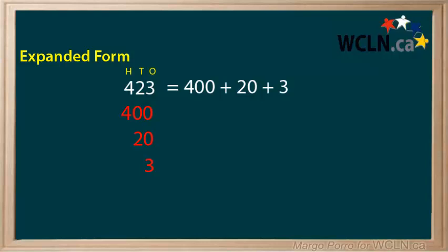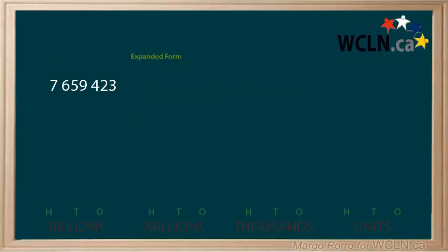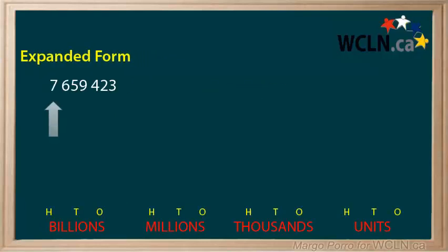Let's try writing a larger number in expanded form. To do this you need to understand place value. Do you know the value of the 7? It is in the millions place. How do we know?